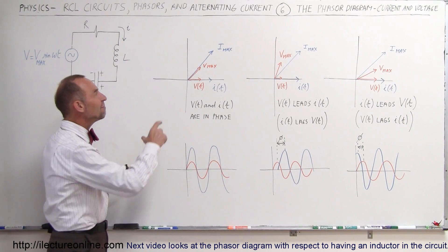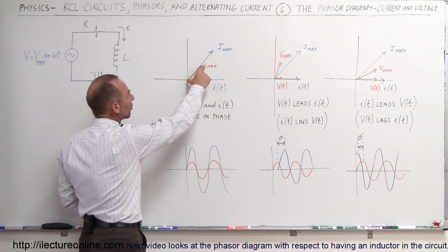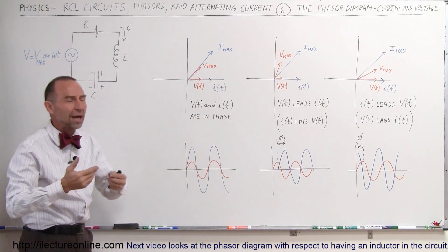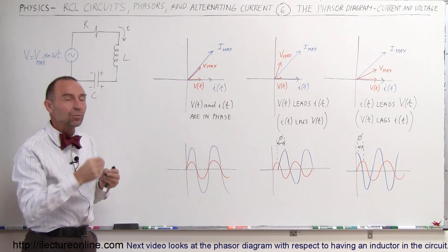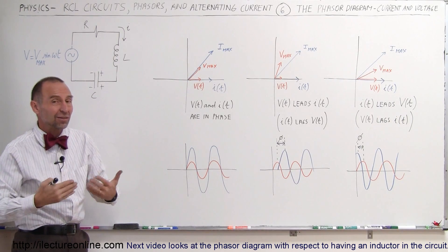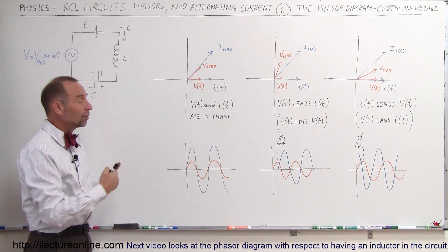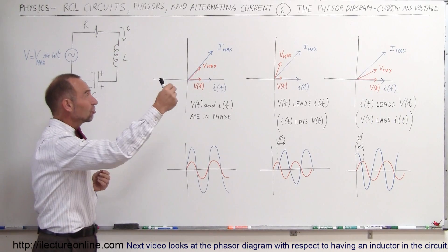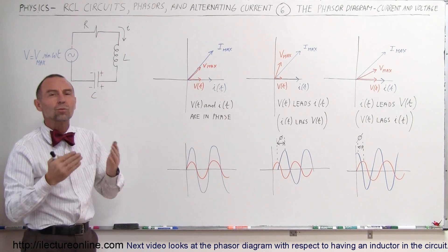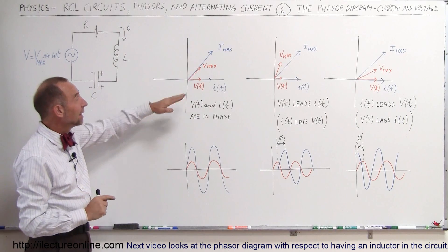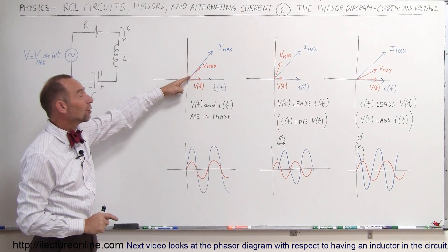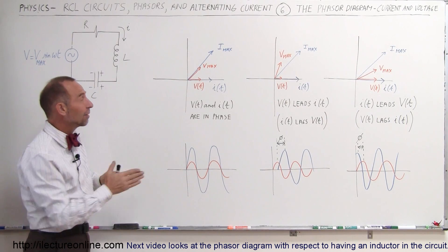They don't have to have the same value. Notice again that voltage is in volts, current is in amps, and so it doesn't really matter what we mean by the length of these particular vectors. They just simply represent the amplitude of the current and the voltage and we could have made the voltage larger and the current smaller in size. It doesn't really make any difference.